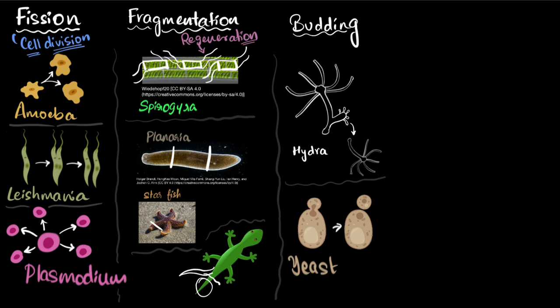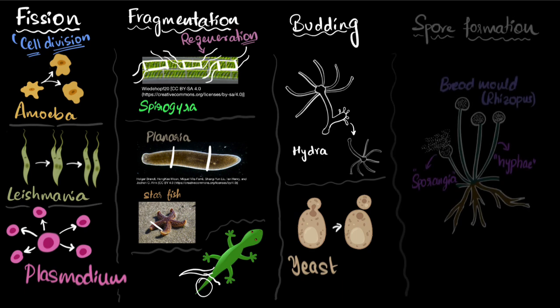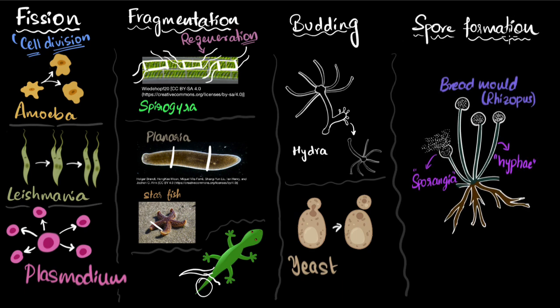There is another way in which organisms can reproduce asexually. And that is by forming spores. If you take bread mold, which is also called rhizopus, it has two parts. The stem-like part is called the hyphae. And then there is this bulb-like part over here, which is called the sporangia. It's called so because it contains tiny, tiny spores in them.